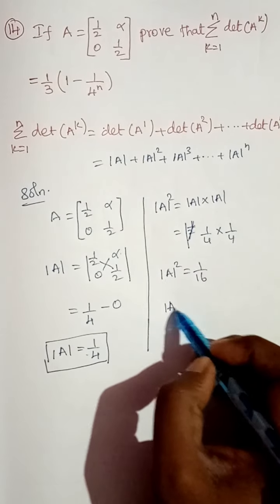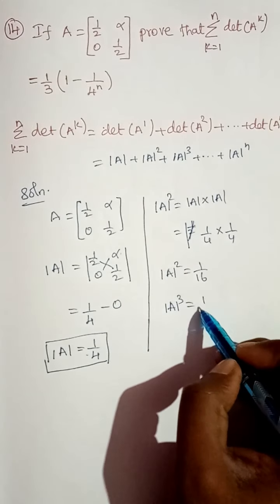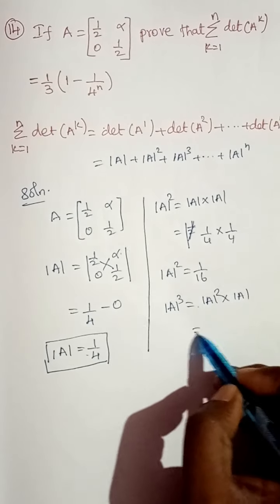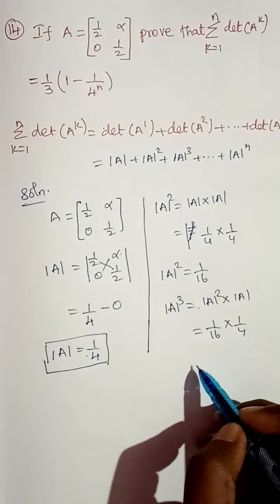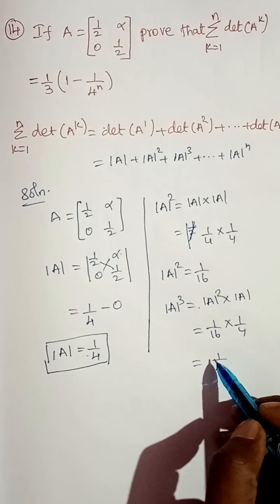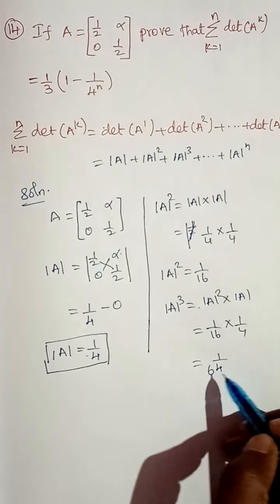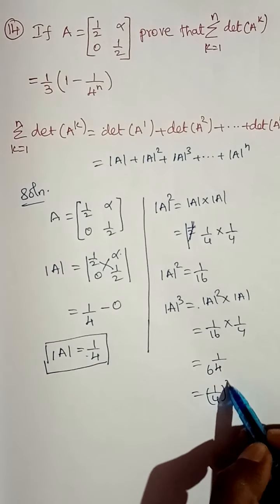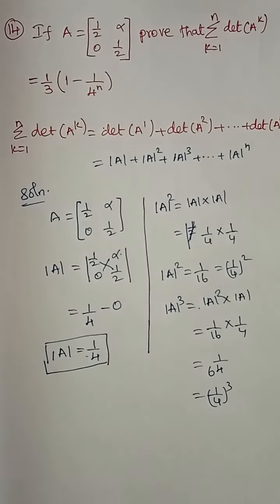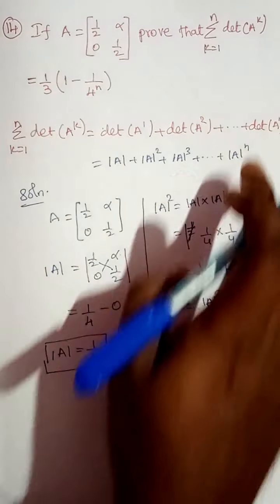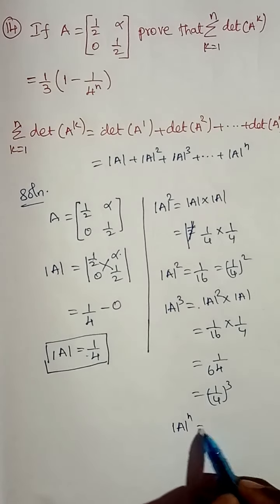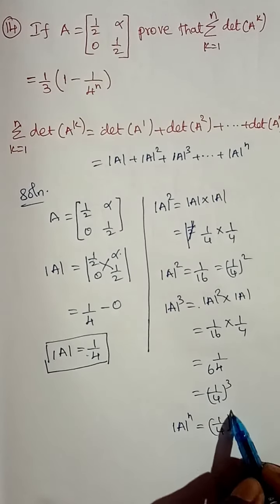So determinant of A cubed is also determinant of A squared times determinant of A, that is equal to 1/16 times 1/4, which equals 1/64. We can write this as (1/4)^3. Similarly, determinant of A squared equals (1/4)^2. In the same way, determinant of A power n equals (1/4)^n.